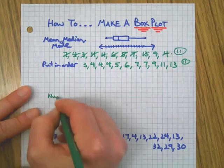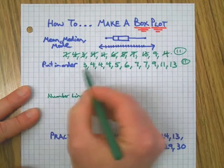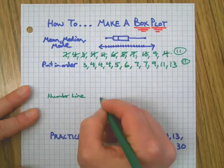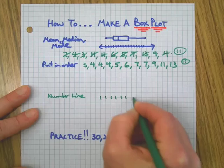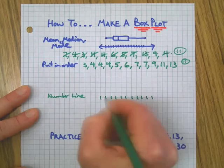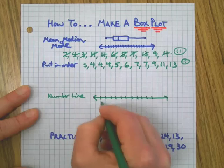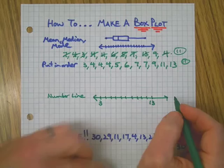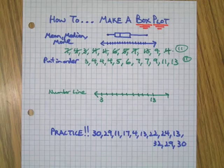Now we need a number line. The number line needs to, like any graph, capture all the data in the set. In this case, I'm just going to make it go from 3 to 13: 3, 4, 5, 6, 7, 8, 9, 10, 11, 12, 13. Quick and dirty number line that goes from 3 to 13.